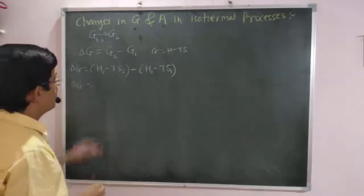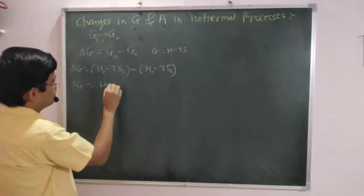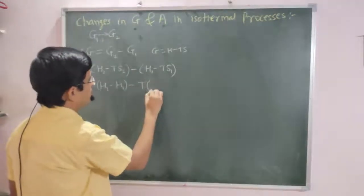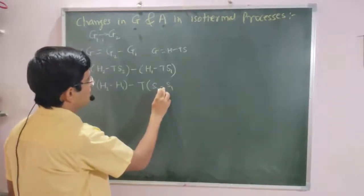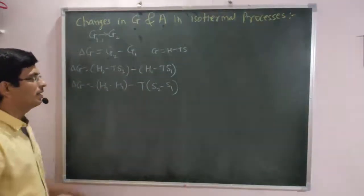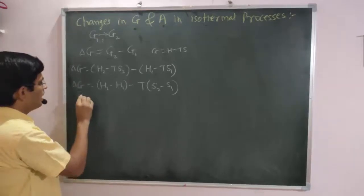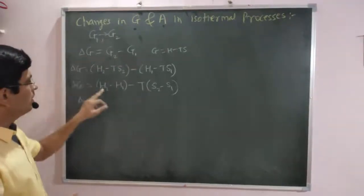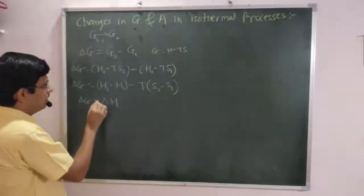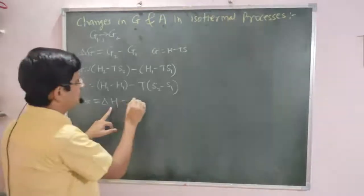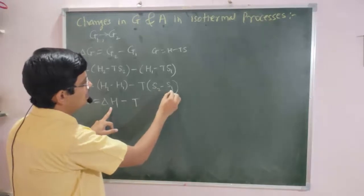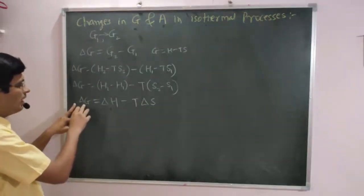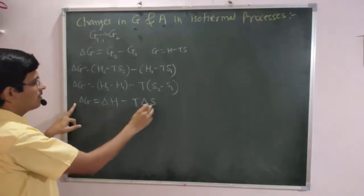Rearranging this, we get H2 minus H1, and since temperature is constant in an isothermal process, we take T common from the entropy terms: S2 minus S1. So delta G is equal to delta H minus T into delta S. This is the change in free energy at constant temperature.